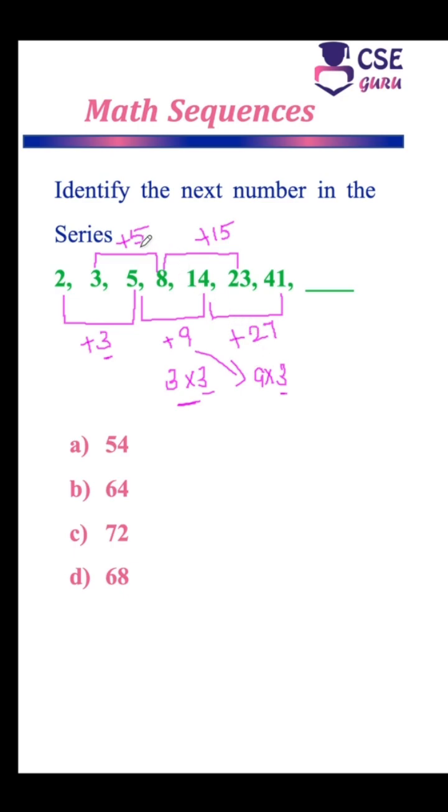So here also, if you are considering first term is 5. 5 into 3, 15. Next term is this difference into 3. 15 into 3, 45. 45 plus 23, 68. The next term in the series is 68. So the correct option here is option D, 68.